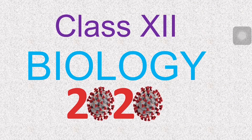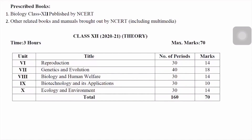For Class 12 biology, after much thought and deliberation I decided to prepare videos on the second unit of the NCERT textbook — genetics and evolution. The genetics and evolution unit (Unit 7) carries 18 marks out of 70, and among all five units, this particular unit carries the maximum marks.